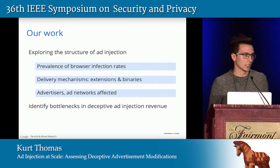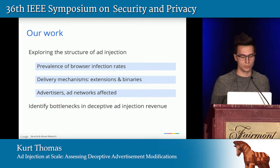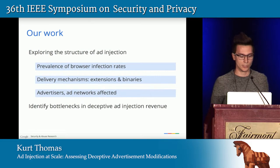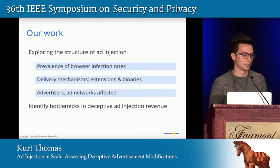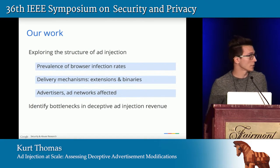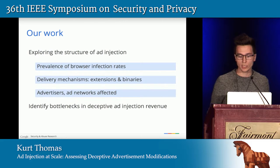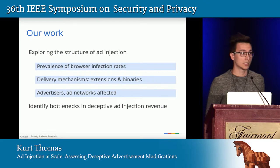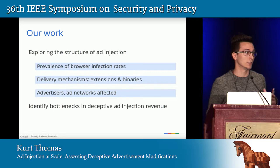What we wanted to do with our study is holistically explore what this ad injection ecosystem looks like — who are all the players involved. Specifically I'll talk about the prevalence of ad injection, the number of users affected, the delivery mechanisms — whether extensions, binaries, or ISPs — and who the advertisers and ad networks are that are complicit or negatively impacted. Ultimately, we want to identify bottlenecks in this ad ecosystem chain that could be disrupted by the security or advertisement community.